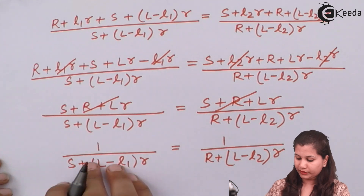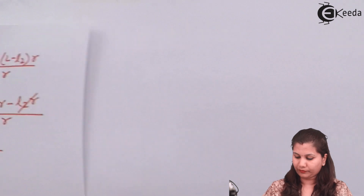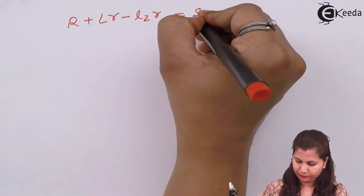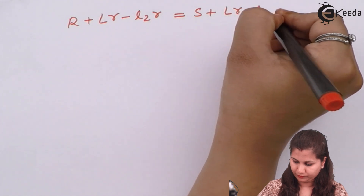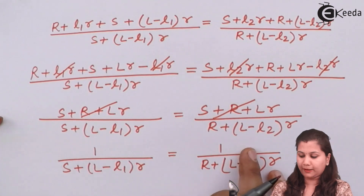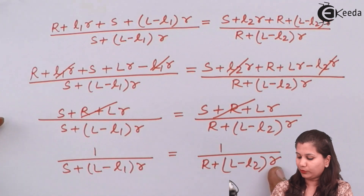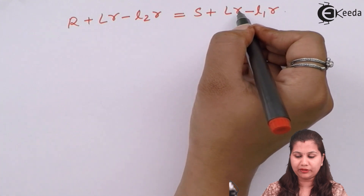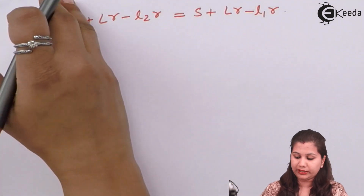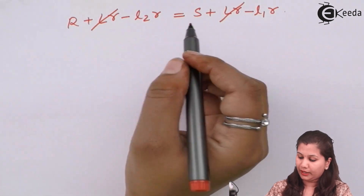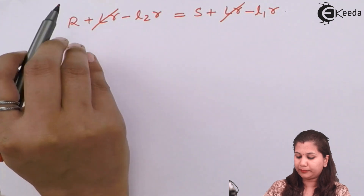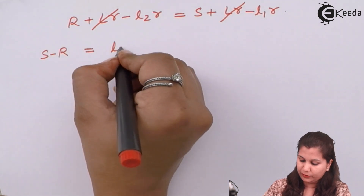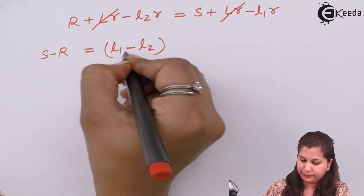Cross multiplying these terms we get: R + L·ρ − L2·ρ = S + L·ρ − L1·ρ. The L·ρ terms appear on both sides and cancel when brought together. Rearranging by bringing L1·ρ to the left and R to the right gives the final result: S − R = (L1 − L2) · ρ.